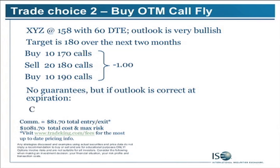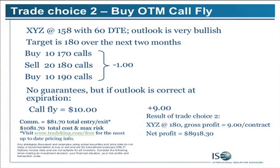You can do all of that for a $1 debit, and that would be your maximum risk. If you are correct, as in the previous example, and the underlying moves up to 180, that call fly would become worth $10. You pay a dollar for it, and that would give you a net profit of $9 per butterfly spread. If you did 10 of those, that would be just under $9,000 including commissions, which would be a pretty handsome sum.